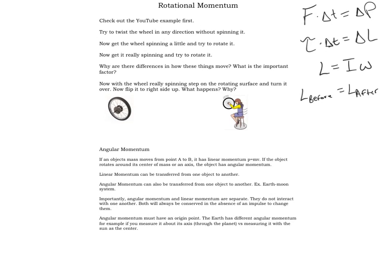So what is angular momentum? If an object moves from point A to point B, it has linear momentum: P equals mv. If the object rotates about a center of mass or an axis, it has angular momentum. The wheel we saw was rotating about its center — that's why it has angular momentum. Just like linear momentum can be transferred from one object to another — remember the billiard ball example — angular momentum can also be transferred from one object to another. What you saw in the demonstration was momentum being transferred from the wheel to the person and from the person to the wheel.